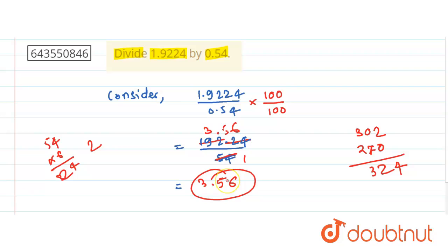This is my answer to this division. So if you divide 1.9224 by 0.54, you will get 3.56. Hope you have got this. Thank you.